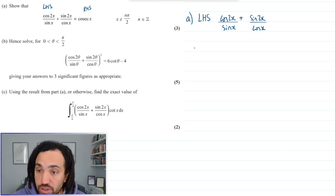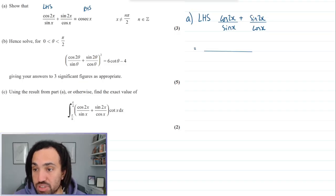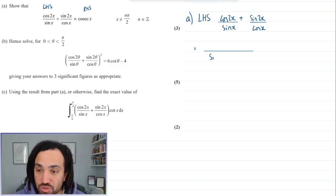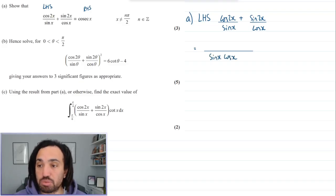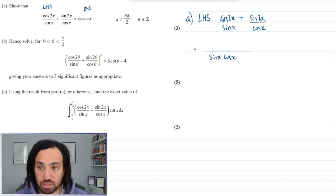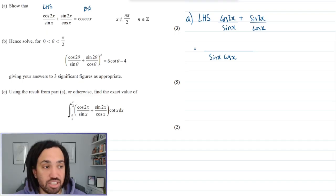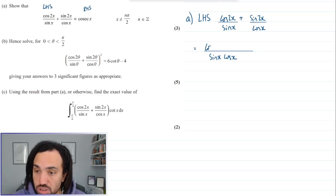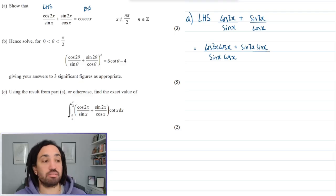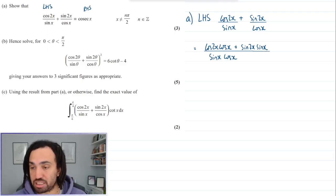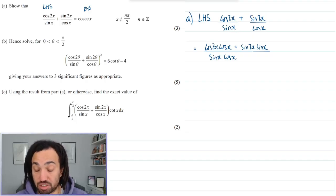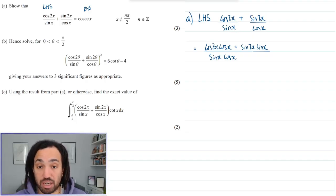The first thing I'm going to do is write it as a single fraction because having two separate fractions is not normally useful. A single fraction will have a denominator of sin x cos x, just multiplying those two denominators together. Then we're going to cross multiply so the left term will become cos 2x multiplied by cos x and the right term will be sin 2x multiplied by sin x. Now that's a single fraction, much easier to work with and much easier to get this in terms of what the right hand side is, cosec x.